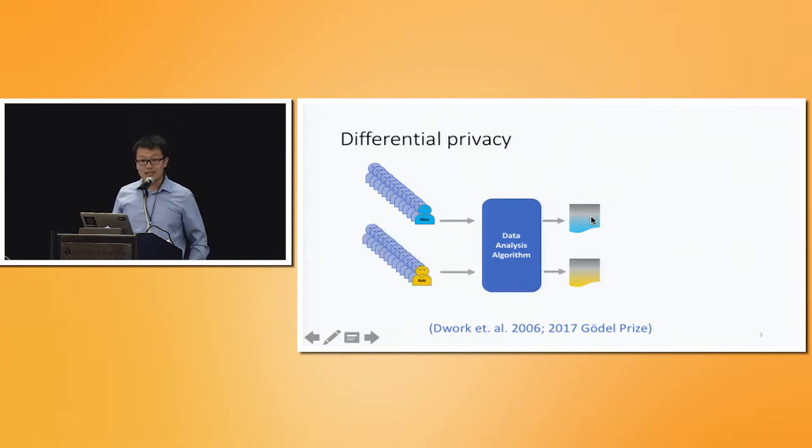Suppose the dataset is slightly changed by replacing this person Alice with Bob, and the same algorithm would end up giving you a different set of linear regression coefficients. So if an adversary who knows everything about Alice and Bob and potentially everything else about the dataset, then he should be able to figure out whether it is Alice or Bob based on whether the coefficient is blueish or yellowish.